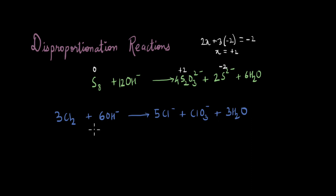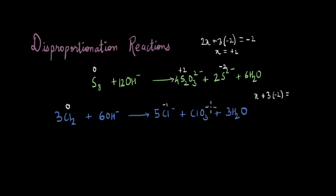One more example is chlorine. Chlorine goes from 0 in its free state to −1 in one product. For the other product, with x + 3(−2) = −1, we get x = +5. So chlorine goes from 0 to −1 in one case and from 0 to +5 in the other, which makes this also a disproportionation reaction.